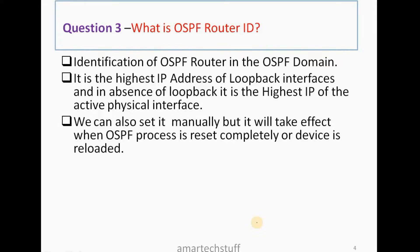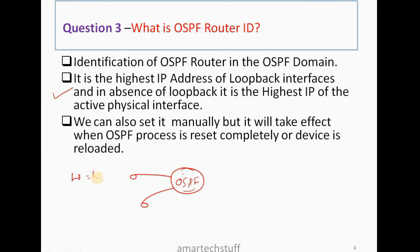Question number three: what is a Router ID? Just as we all have names by which we are identified, in an OSPF domain, routers are identified by their Router IDs. The Router ID is the highest IP address of the loopback interface. Consider a router with two loopbacks: loopback 0 with IP 100.1.1.1/32 and loopback 1 with IP 200.1.1.1/32.